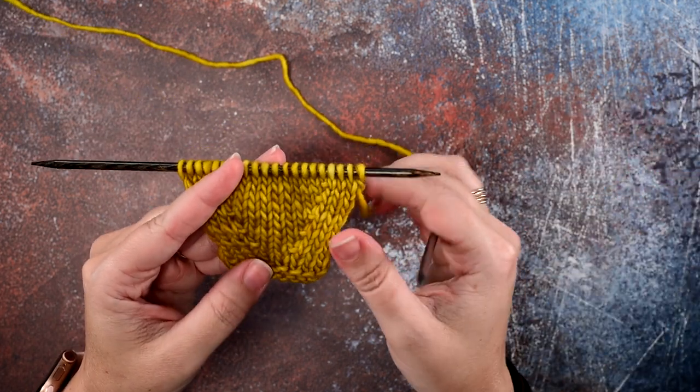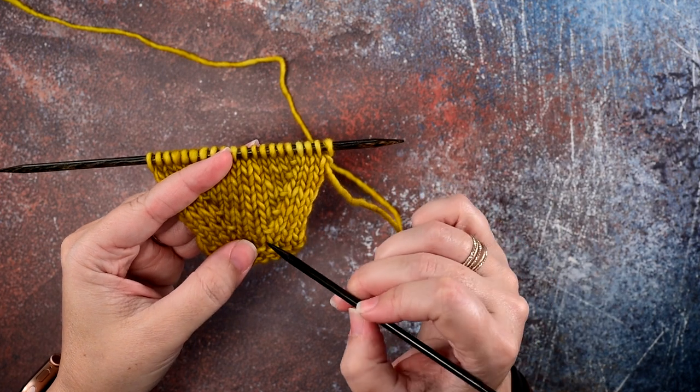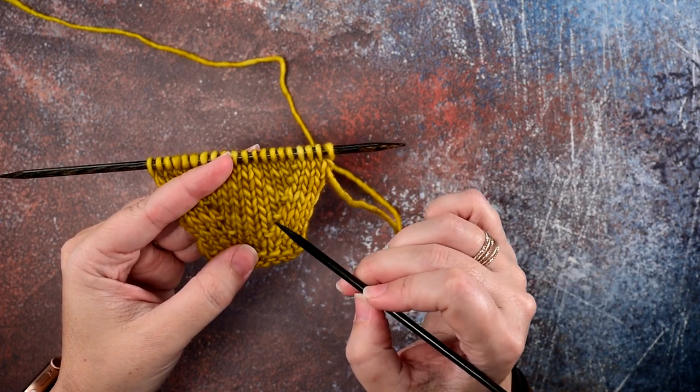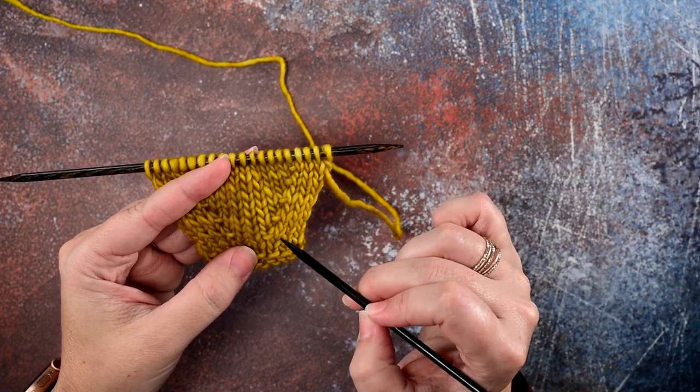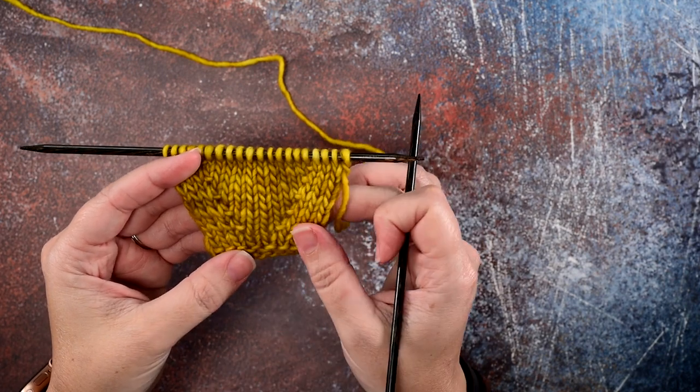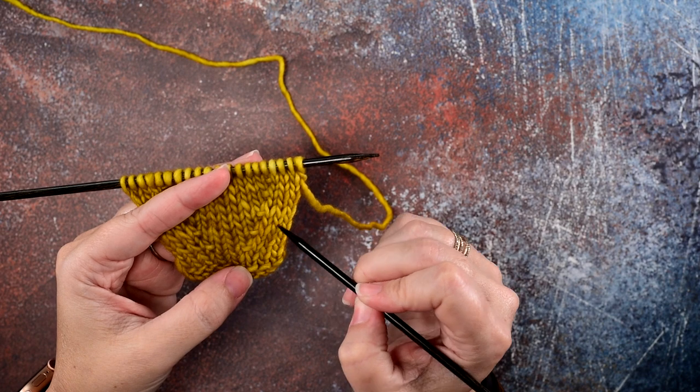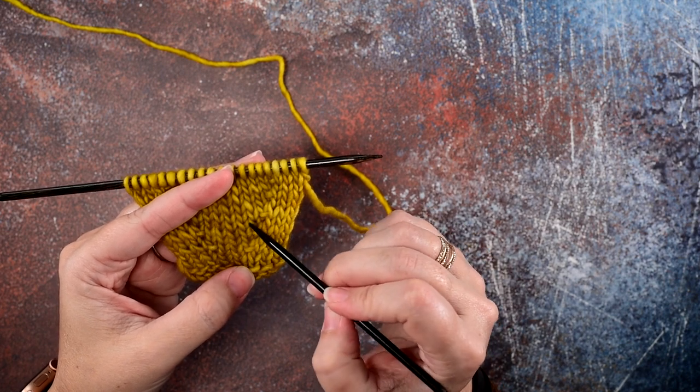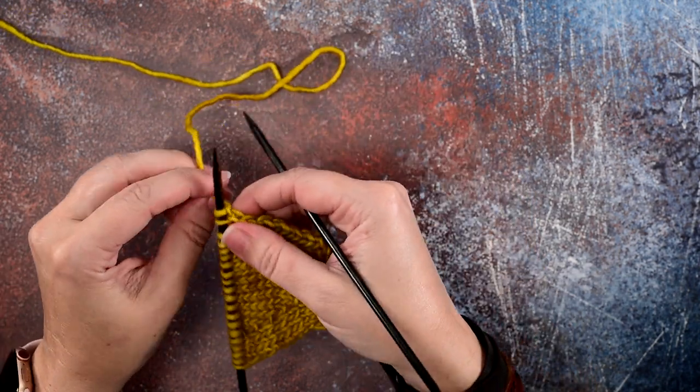If you take a look at our work here, you can see that the KFB is actually these little bars right here, just to the left of this fourth stitch. This is a way to increase your work, and if you're looking for some shaping, it will actually lean to the right as it increases to the left of your stitch that you place it in. I'll show you how to work the knit front and back stitch.